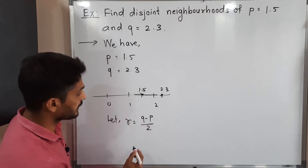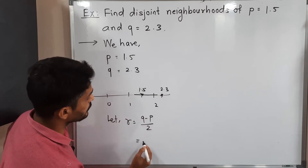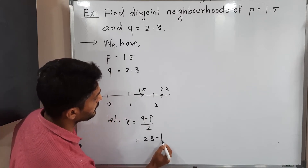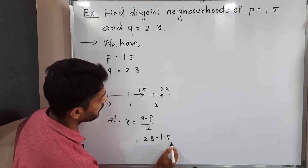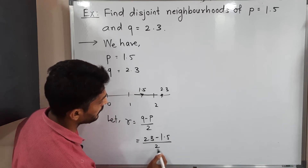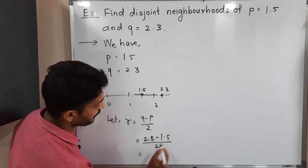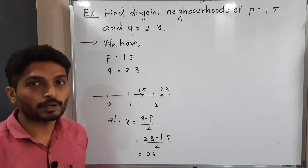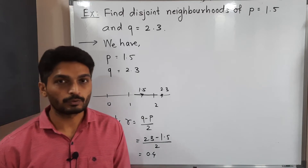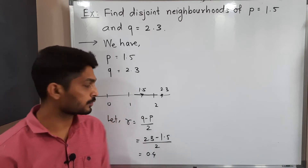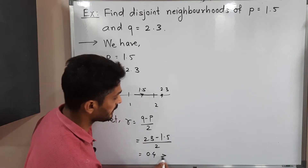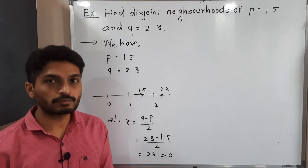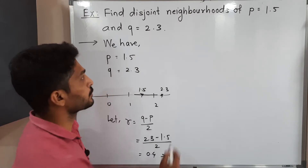Let us find the value of R. Q is 2.3, P is 1.5, so R = (2.3 minus 1.5) divided by 2 = 0.4. This value is clearly greater than 0.